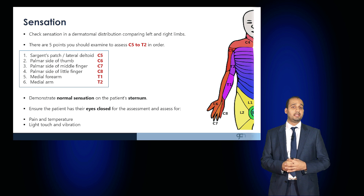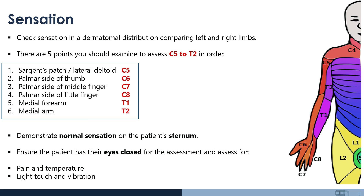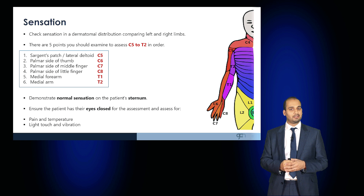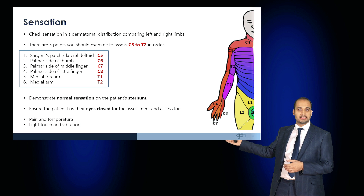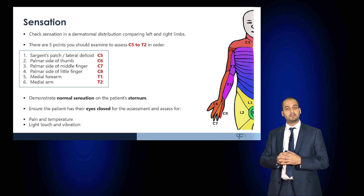Next, move on to examine sensation in a dermatomal distribution, comparing the left and right limbs. Five key points allow you to assess individual dermatomes from C5 to T2: C5 can be tested over Sergeant's patch or the lateral deltoid; C6 over the palmar side of the thumb; C7 the palmar side of the middle finger; C8 the palmar side of the little finger; T1 over the medial forearm; and T2 over the medial arm.